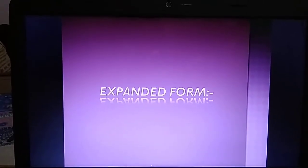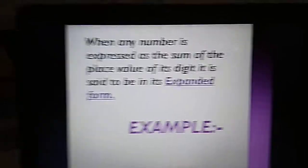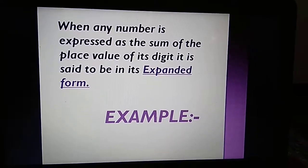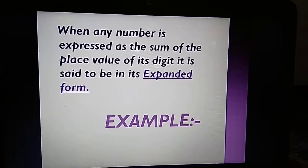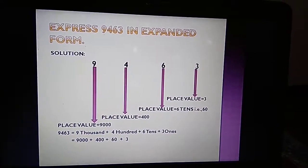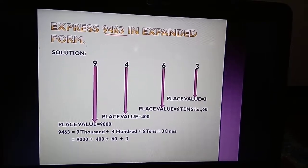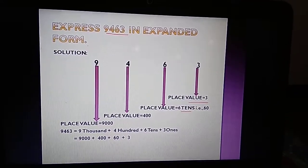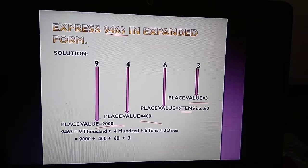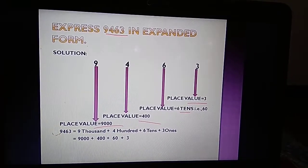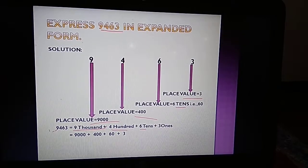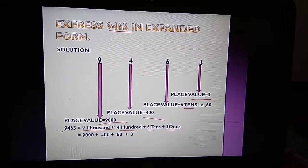Now we will study expanded form. When any number is expressed as the sum of the place values of its digits, it is said to be in expanded form. Let's take one example. Here we have the number 9463. The place value of 3 is 3, the place value of 6 is 60, the place value of 4 is 400, and the place value of 9 is 9000. Thus, the expanded form of 9463 is 9000 + 400 + 60 + 3.